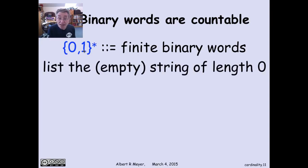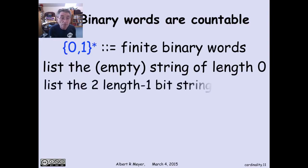Let's just do it by length. Let's begin by listing the empty word or string of length 0. And then I'm going to list all the one-bit strings, the strings of length 1. There are two of those. So let the next element of the list after the empty string be 0, and then the next element after that be 1.